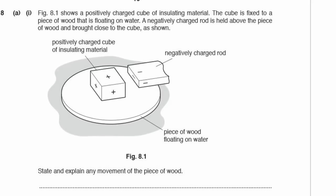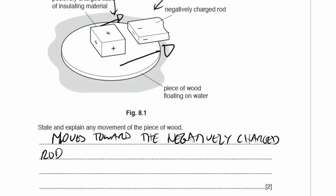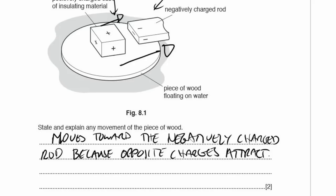Question 8A1. Figure 8.1 shows a positively charged cube of insulating material fixed to a piece of wood floating on water. A negatively charged rod is held above and brought close to the cube. The wood will move towards the negatively charged rod because opposite charges attract.